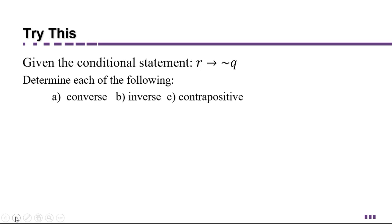You can also do the same thing when you have symbols. So here I have the statement, R implies not Q. And we're going to determine each of the following. A the converse, B the inverse, and C the contrapositive.